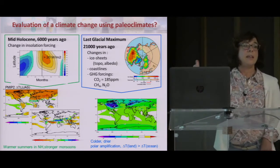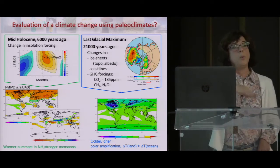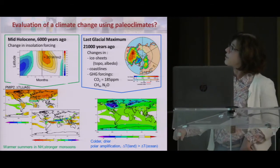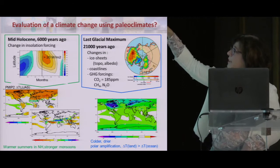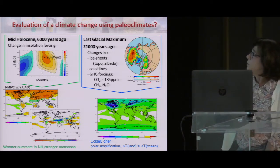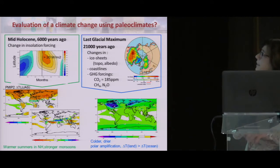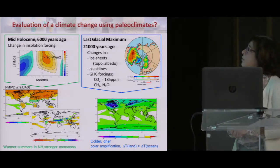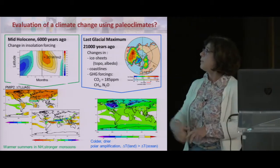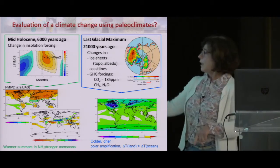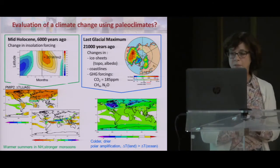The other period we really like is the Last Glacial Maximum, because the change in temperature compared to what we project for future climate is of the same order of magnitude. It requires an ice sheet as a boundary condition, changing the coastline and sea level — about 120 meters less than today — and lower CO2 and other trace gases. Because of that, it's a colder climate, with maximum cooling over the ice sheet, polar amplification, and a land-sea contrast in temperature change.